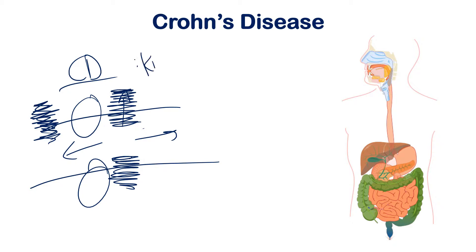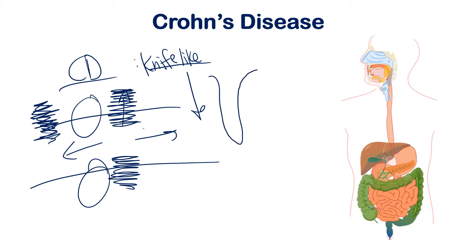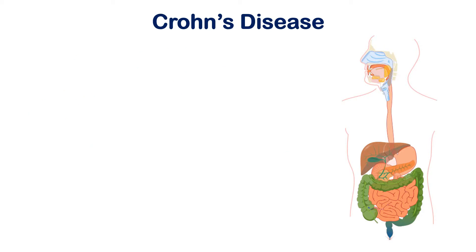This transmural damage is described as knife-like. Imagine someone took a knife and stabbed through all the layers — it goes all the way through every layer and then it's back to normal on the other side. This is what's called a knife-like presentation when you look at it on histology.